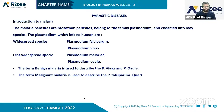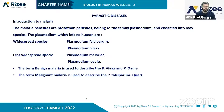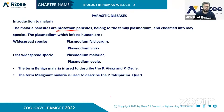The infective stage is the sporozoite, which has a sickle cell shape. The mode of infection is by inoculation. The malaria parasite is a protozoan parasite, belonging to the family Plasmodium, and is classified into many species.